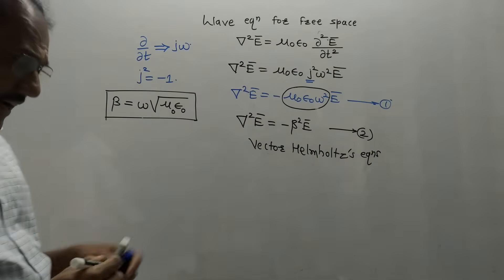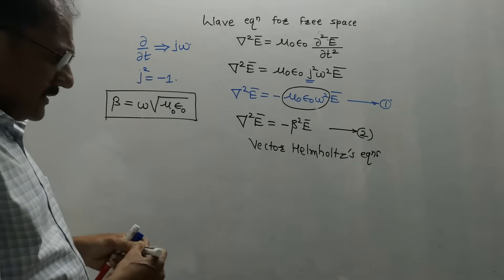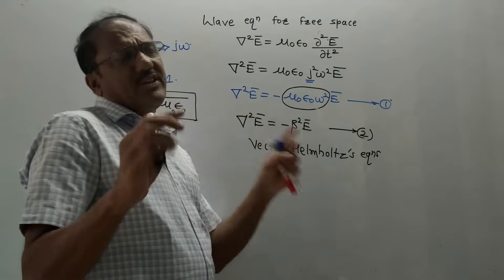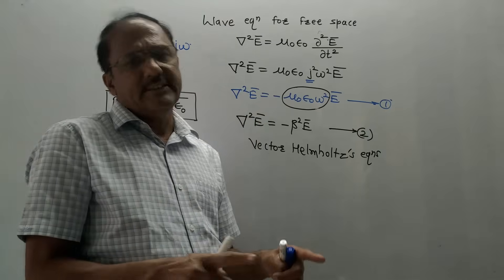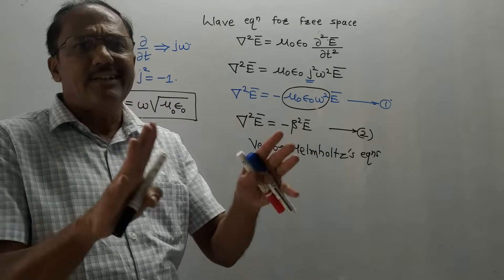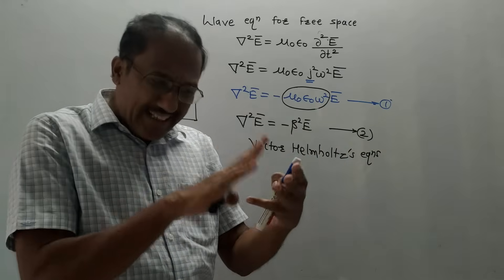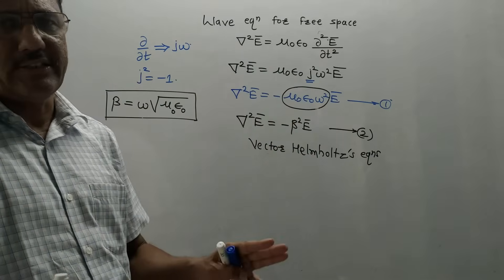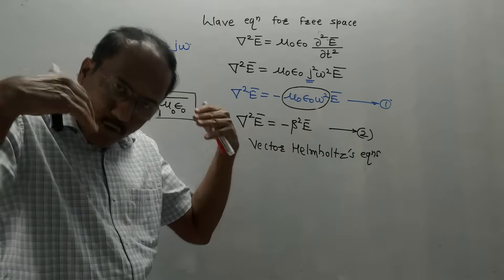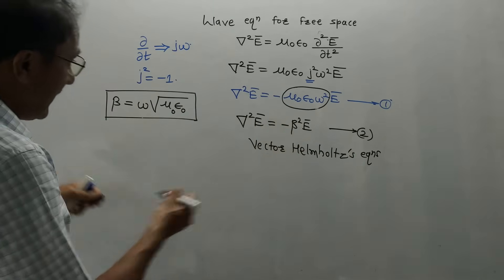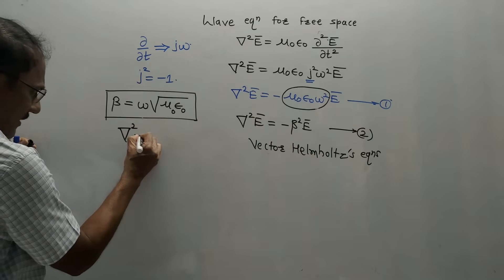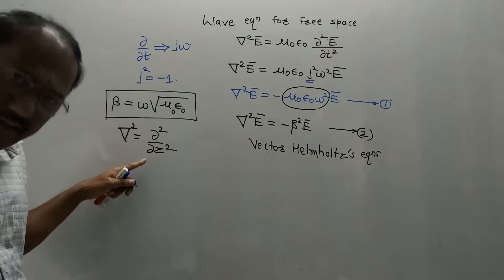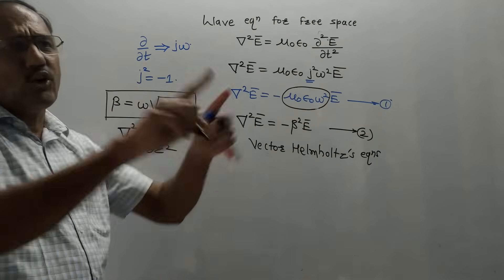This is not the end of the derivation; we have to further simplify this equation. Del is a vector operator. Since we are considering that the wave or power of the wave travels along the z-direction, del squared can be simplified to ∂²/∂z², because the wave is along z only — it cannot be along all three directions.